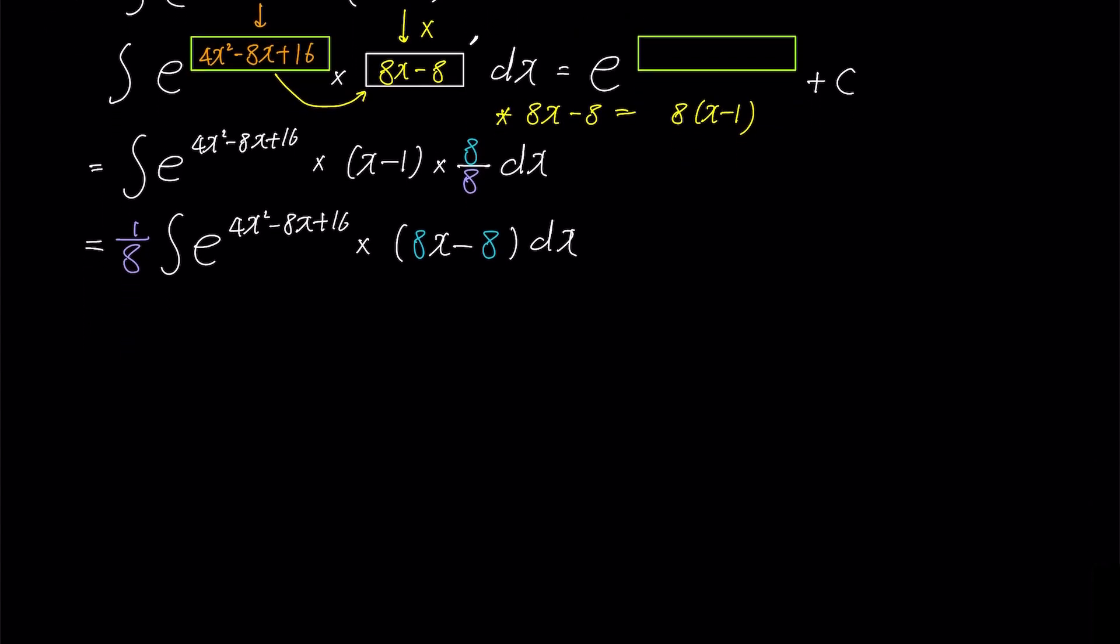The box rule makes a comeback. We slap on our 1 over 8, and just like that, it's easy peasy to see which one is the box and which one is the box prime. Just copy and paste. Don't forget to multiply the right answer by 1 over 8 and pop in 4x squared minus 8x plus 16 into the green box. Voila, we found the answer with lightning speed.